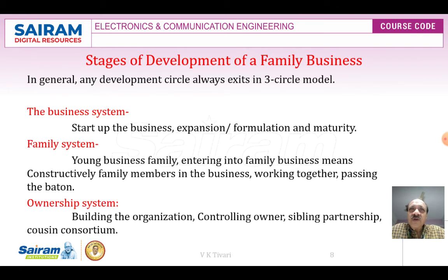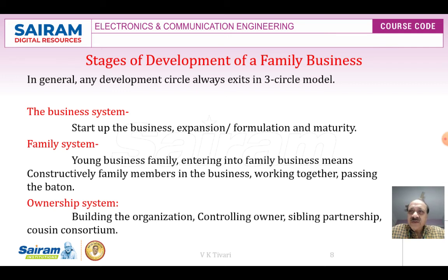We need to discuss a little more on the stages of development of a family business. In general, any development circle consists of a three-circle model — similar to a life cycle: child, young, old. The business system consists of: start of the business, expansion and formalization, and maturity. Second is the family system: young business family entering into family business, constructively working together, and passing the baton. Then there is the ownership system: building the organization, controlling owner, sibling partnership, and cousin consortium.